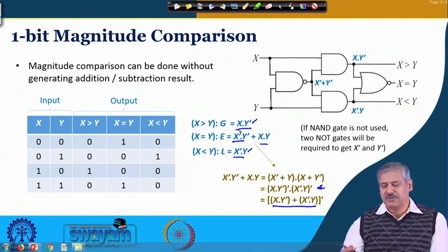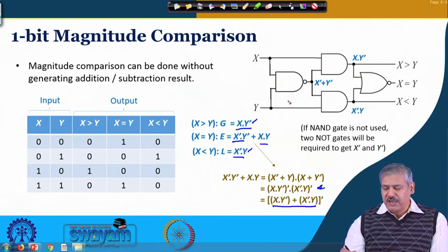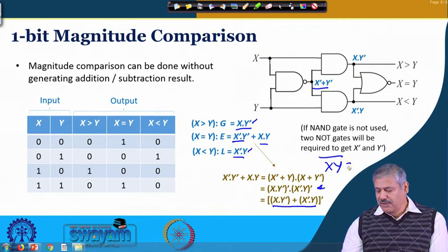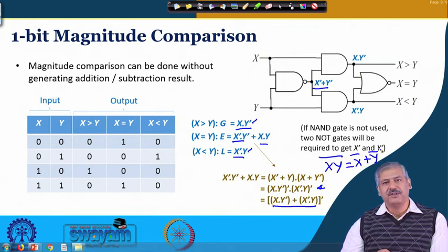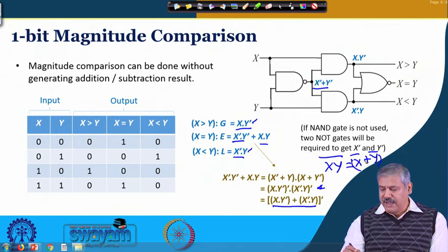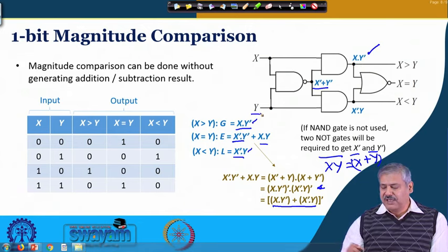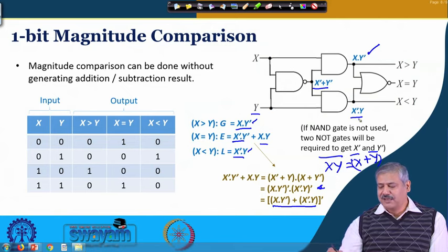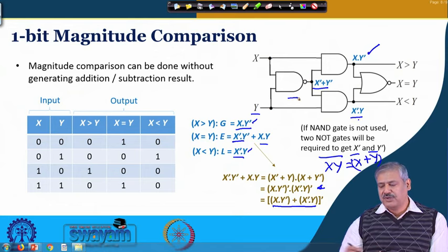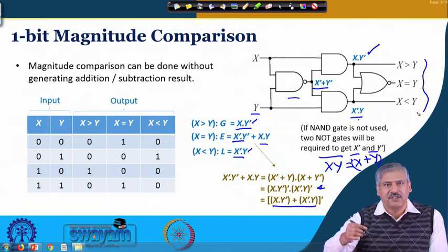We can generate x·y' and x'·y using a NAND gate. If we place a NAND gate between x and y, we get x'+ y'. When we AND x with that output, x·x' becomes 0, so x·y' is generated. When we AND y with that output, y·y' becomes 0, so x'·y is generated. One NAND gate suffices — you do not need additional gates. That completes 1-bit comparison.